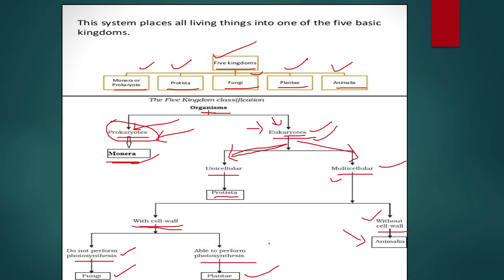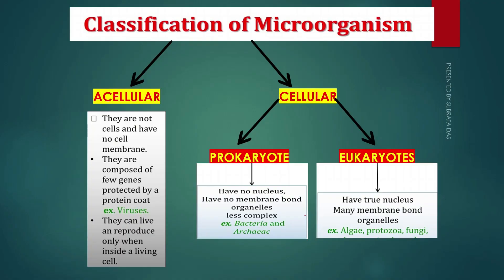If multicellular eukaryotes with a cell wall perform photosynthesis, they are placed in the Plantae group. So all living organisms are placed in five kingdoms: Monera (prokaryotes), Protista (unicellular eukaryotes), Animalia (eukaryotic, multicellular, without cell wall), Fungi (eukaryotic, multicellular, with cell wall, no photosynthesis), and Plantae (eukaryotic, multicellular, with cell wall, performs photosynthesis). This is how Whittaker differentiated all living organisms.